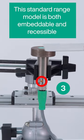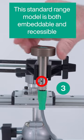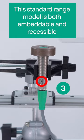Sensor 3 is a standard range model. Its forward-focus sensing area allows the sensor to both be flush-mounted and recessed.